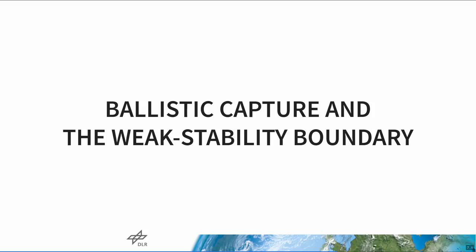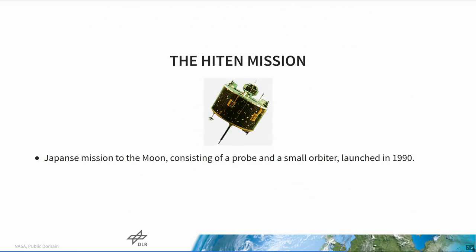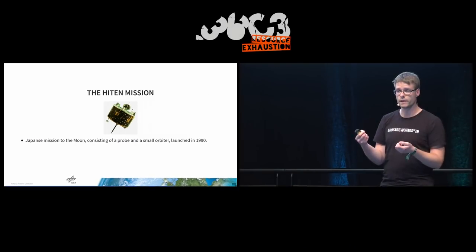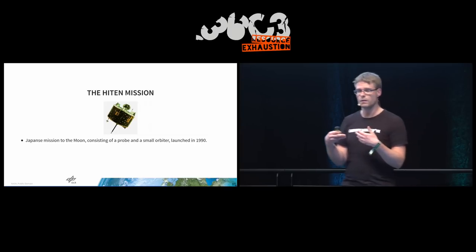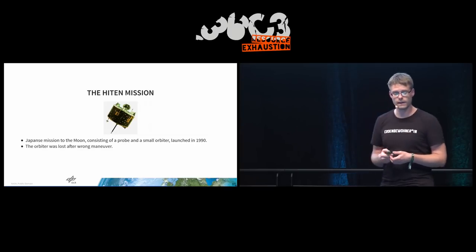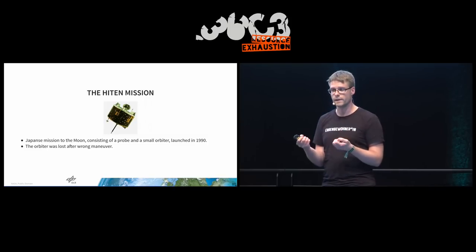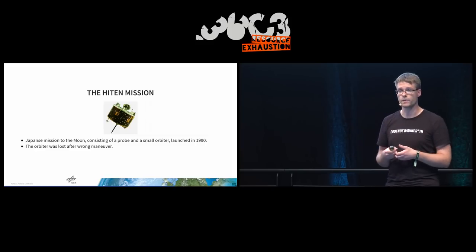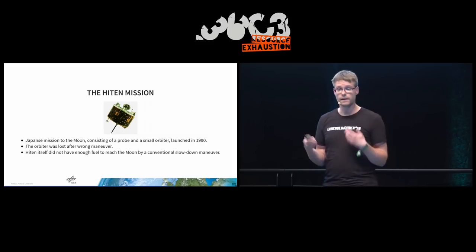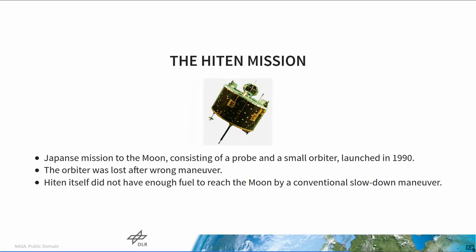Let's now go to a more advanced technique: ballistic capture. This whole business started with a mission from the beginning of the 1990s — the Hiten mission. It was a Japanese moon probe consisting of a probe with a small orbiter inside that was separated. It was supposed to enter orbit around the Moon, but unfortunately it missed its maneuver — it didn't apply enough delta-v. The mission was sort of lost at that point because Hiten itself, the main probe, did not have enough fuel to reach the Moon. Of course, that's a risk you have to take, and they were probably pretty devastated.